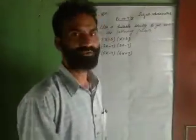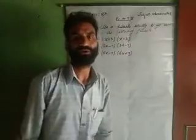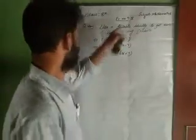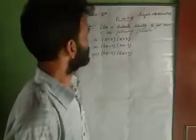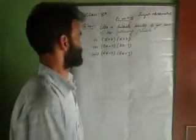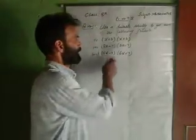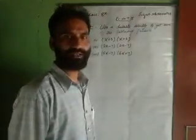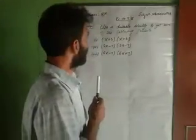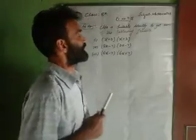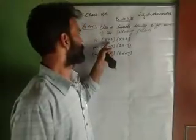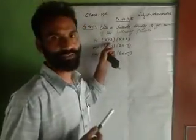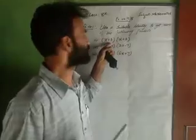Assalamualaikum dear students, today I am going to teach you the subject of mathematics for class eighth. The exercise number is 9.5, question number 9.5, question number one — to find each of the following products using a suitable identity. We will identify which identity can be used and what makes it useful.